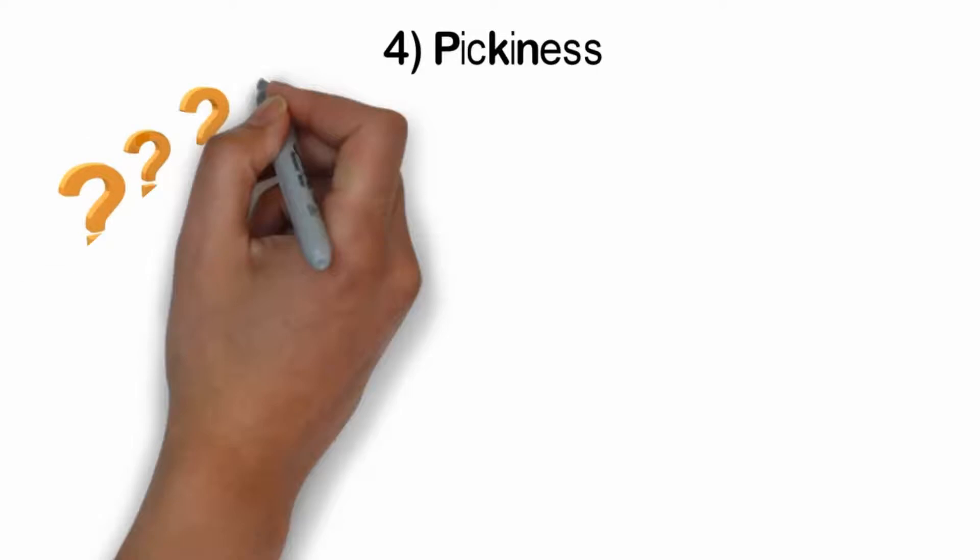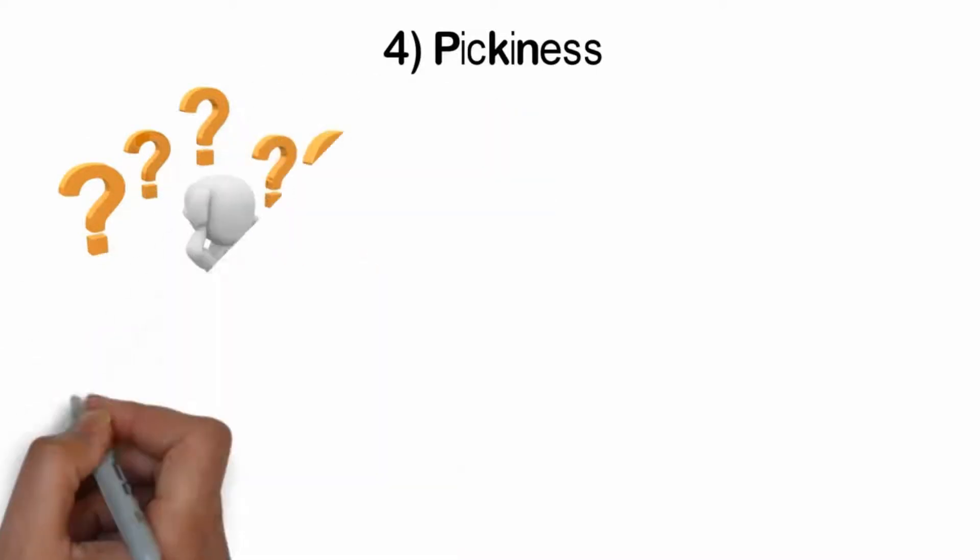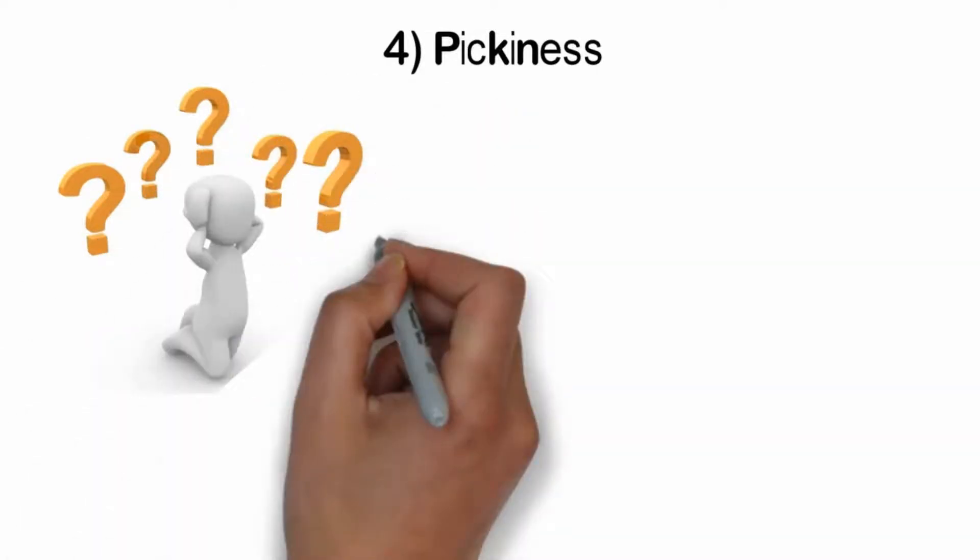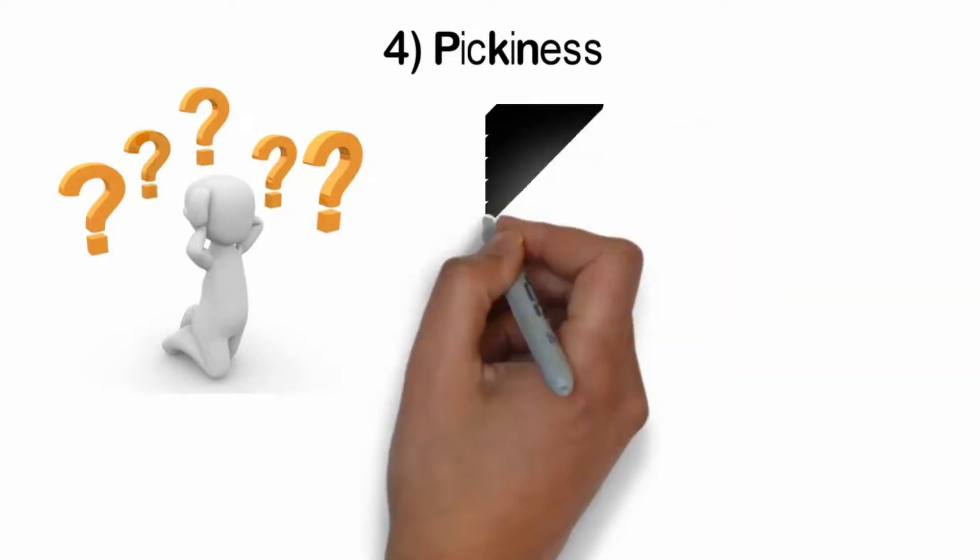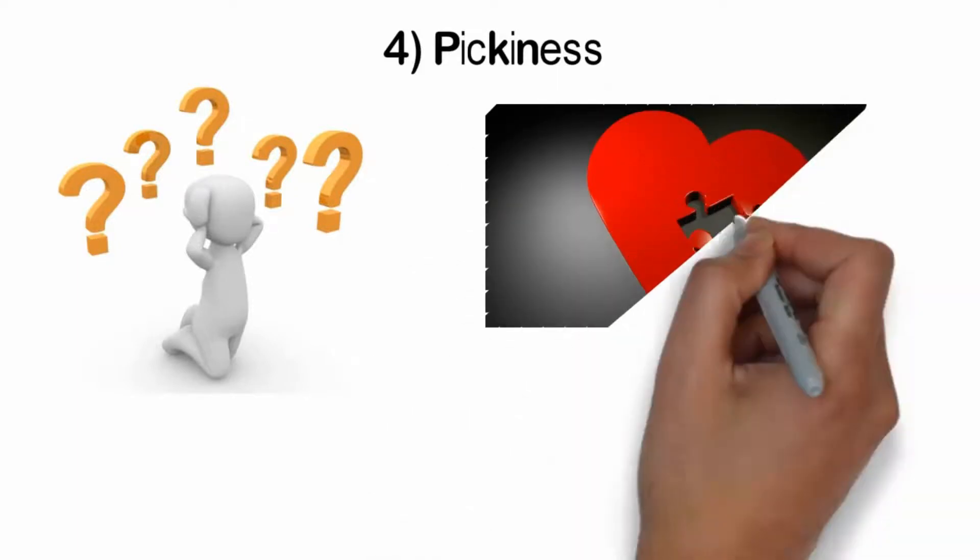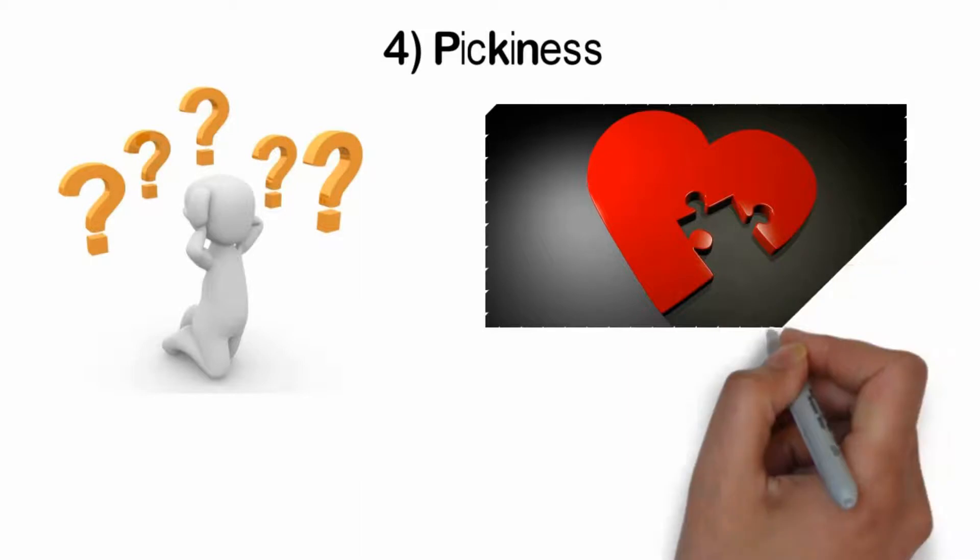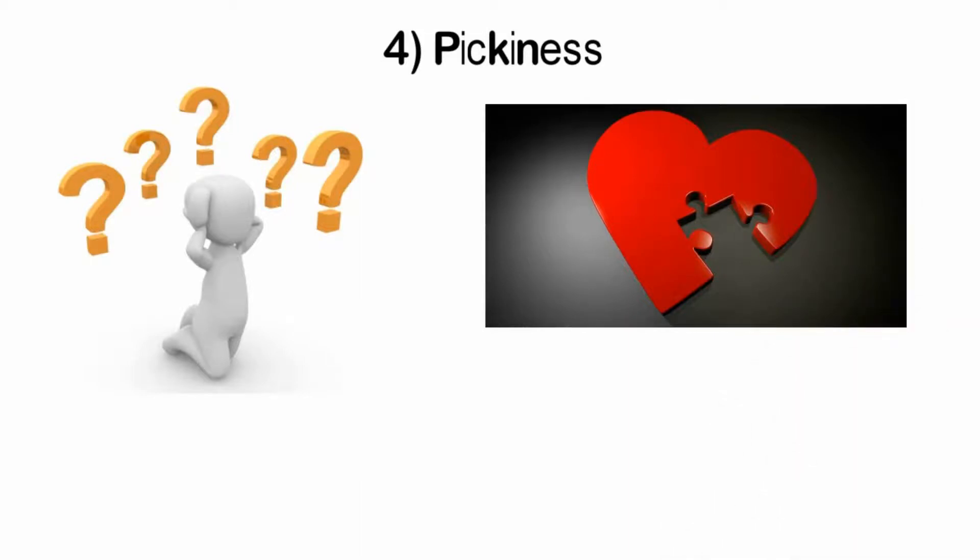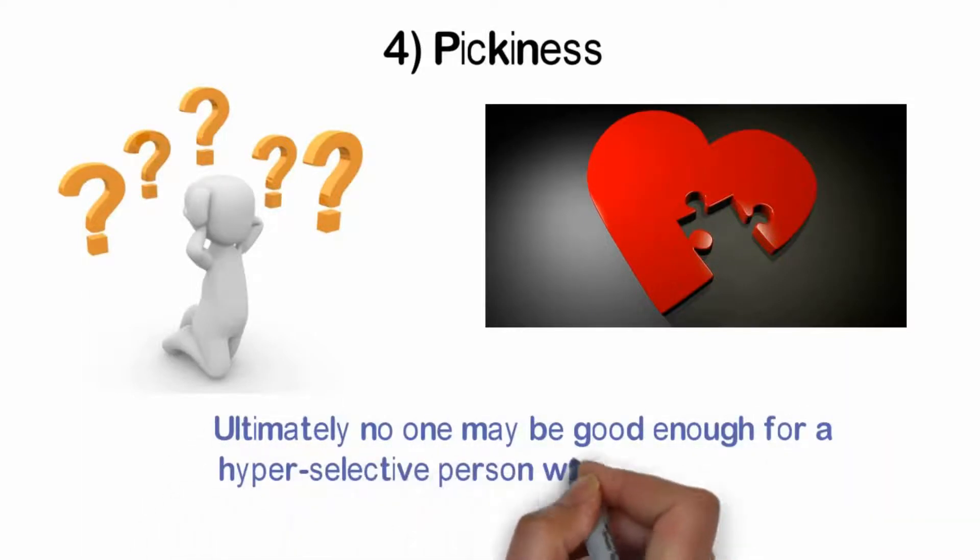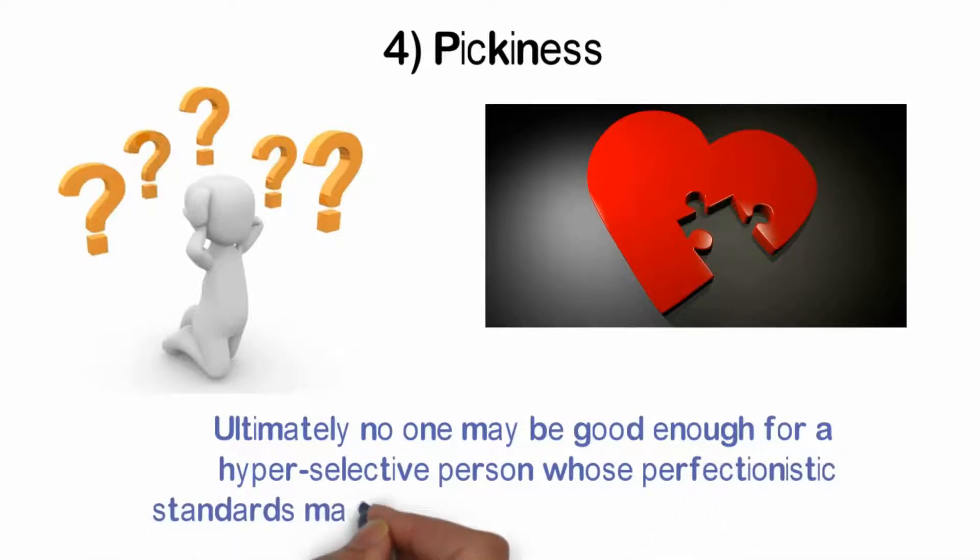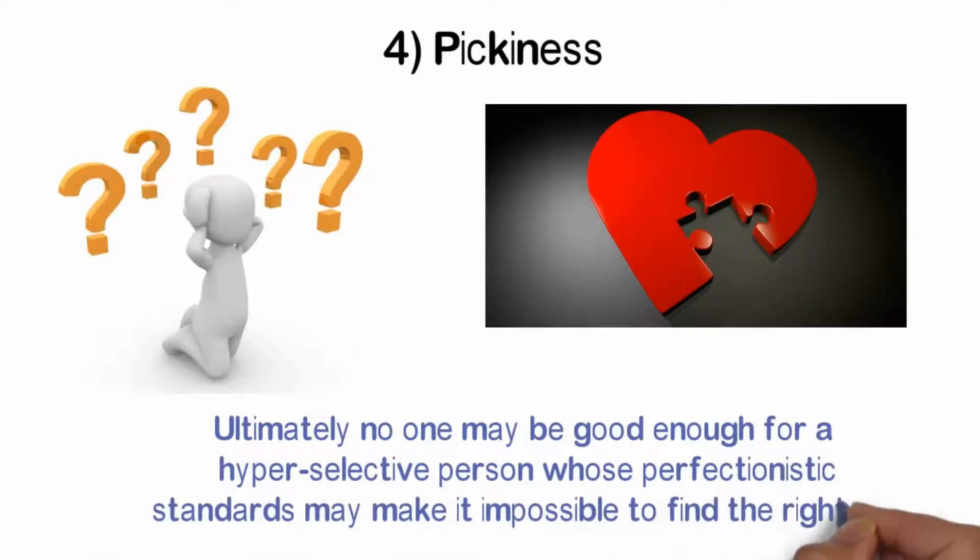Number 4. Pickiness. Okay, keep listening. There is no question standards are important to have. And everyone has preferences on the type of person they're attracted to, both physically and intellectually. But when you weed through potential suitors, pinpointing one thing after another that makes them a no on your list, you could be leaning too much on the harsh side. Ultimately, no one may be good enough for a hyper-selective person whose perfectionistic standards may make it impossible to find the right one.